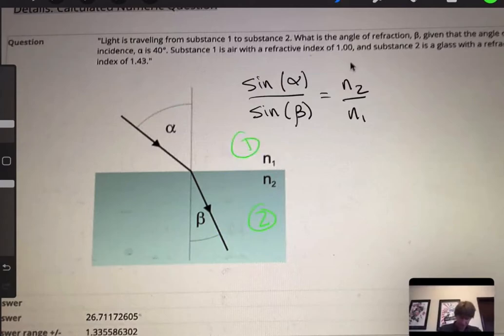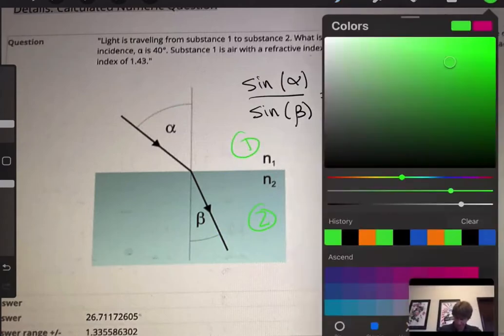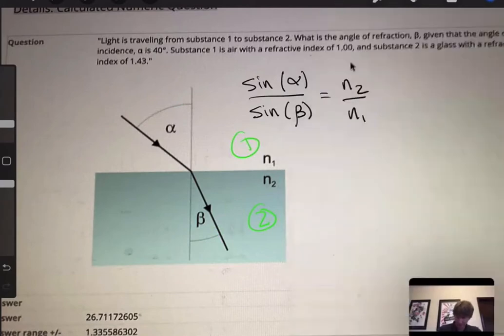Let's change colors to a nice blue. Substance two is down here, substance one is up here. n1 is the refractive index of substance one and n2 is the refractive index of substance two.